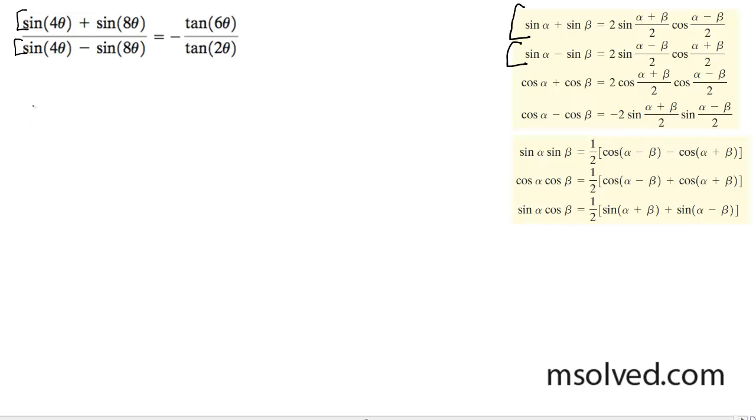So for this first term, we're going to end up with 2 sine 4 theta plus 8 theta divided by 2 times the cosine of 4 theta, that should be 4, not an 8, minus 8 theta divided by 2.